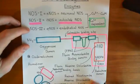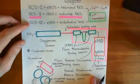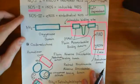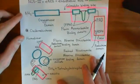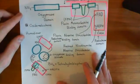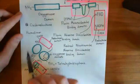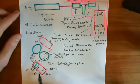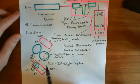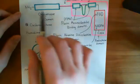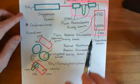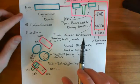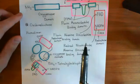In order to actually function as nitric oxide synthesizers, what they're going to have to do is dimerize together. Why do they have to dimerize? Why isn't the protein on its own capable of catalyzing the reaction?